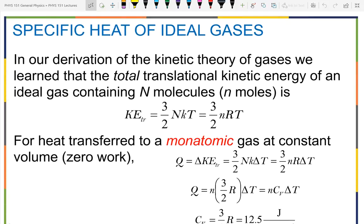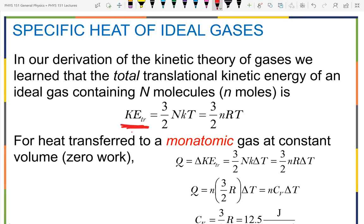Now the new material. In our derivation for the kinetic theory of gases — the long derivation starting with a particle bouncing in a box — the end result was the translational kinetic energy, specifically the kinetic energy associated with things moving (translating) rather than rotating. That equals three-halves NkT, where N is the number of molecules and k is the Boltzmann constant, and temperature must be in Kelvins. Or equivalently, three-halves nRT using the gas constant R and lowercase n for moles.